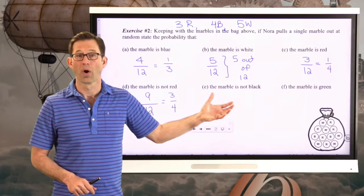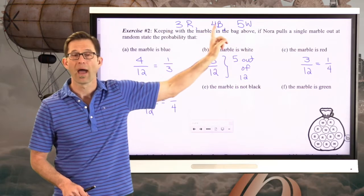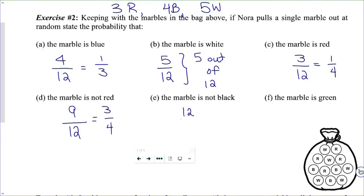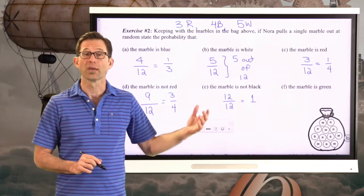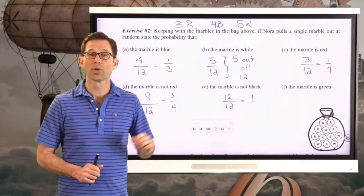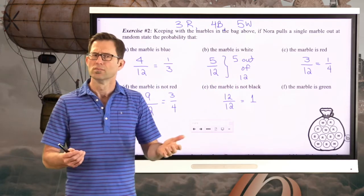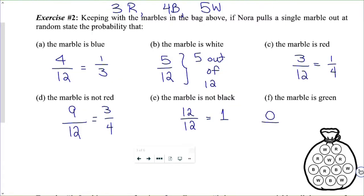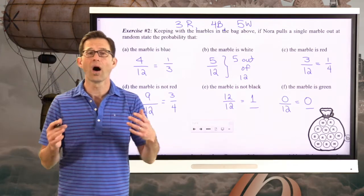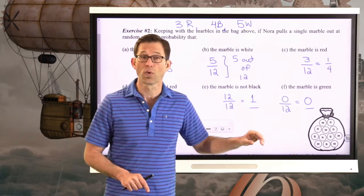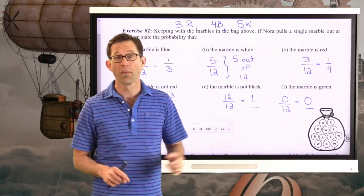That would reduce to three-quarters, but 9 twelfths is good as well. The probability the marble is not black — we count how many fall into the category of not black, and that would be all of them. So the probability it's not black would be 12 twelfths, which you can also express as the number one — it's a guarantee the marble won't be black. And the probability that the marble is green: counting how many are green, that would be zero. So the probability is zero twelfths, which you write down as zero.